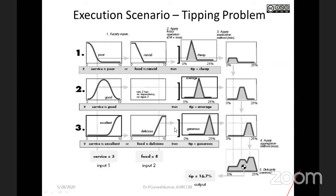Coming to the second rule: if service equal to 3 is cut in the good membership near 1 and there is no food condition, the entire portion of the good linguistic coverage is taken out. For the third rule: service equal to 3 is cut at 0 in excellent, while food equal to 8 cuts in delicious near 1, so that portion is taken. Then by applying the minimum operation, those values are taken out.